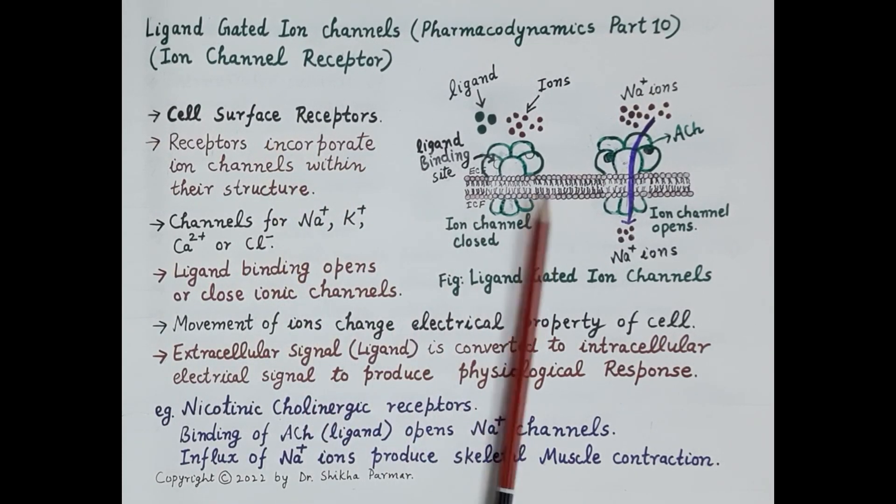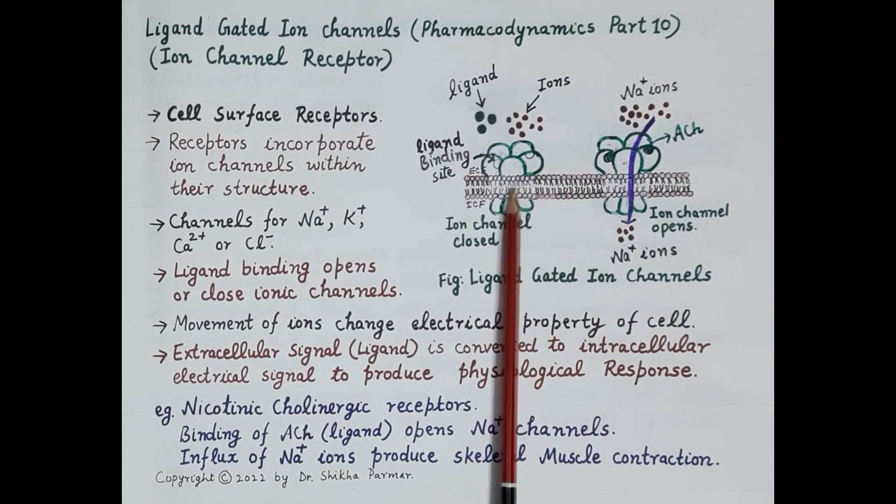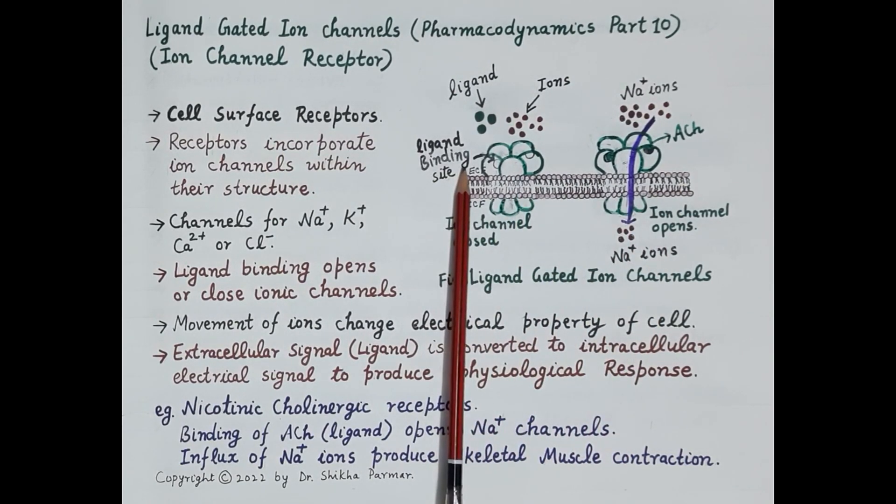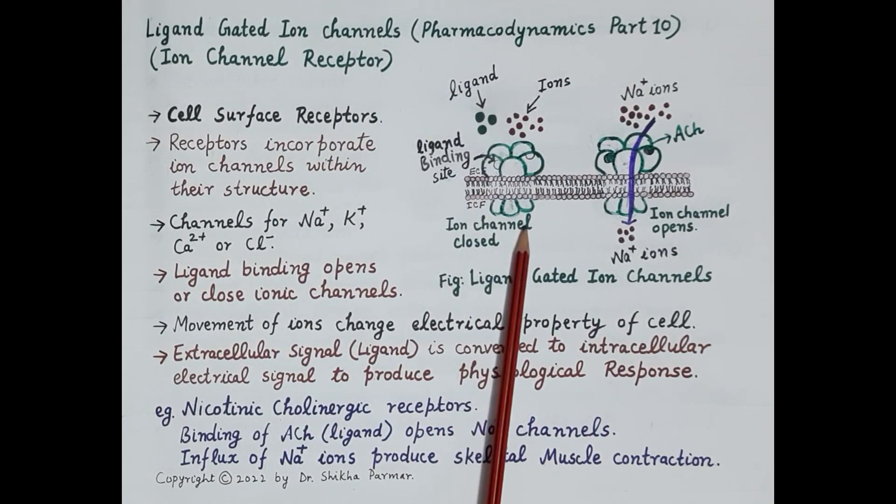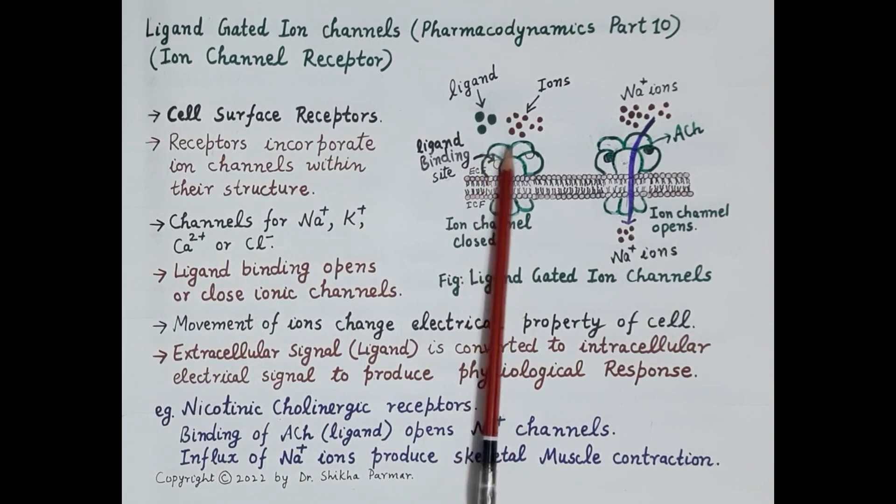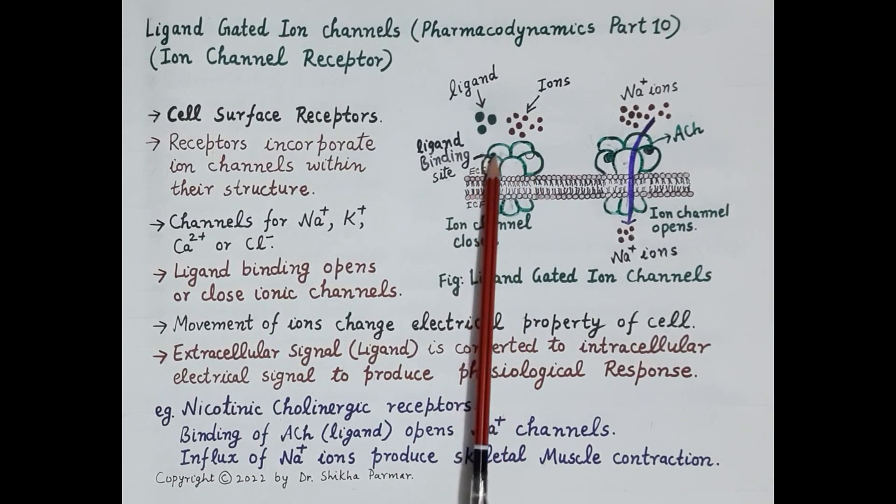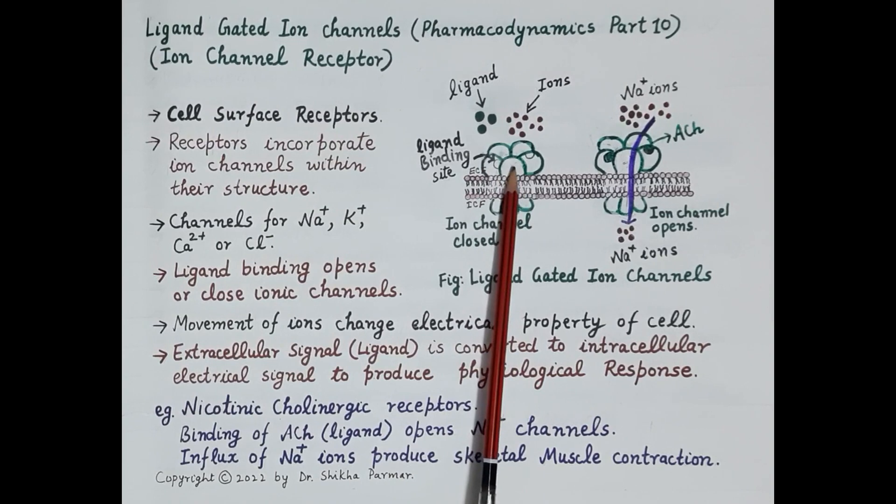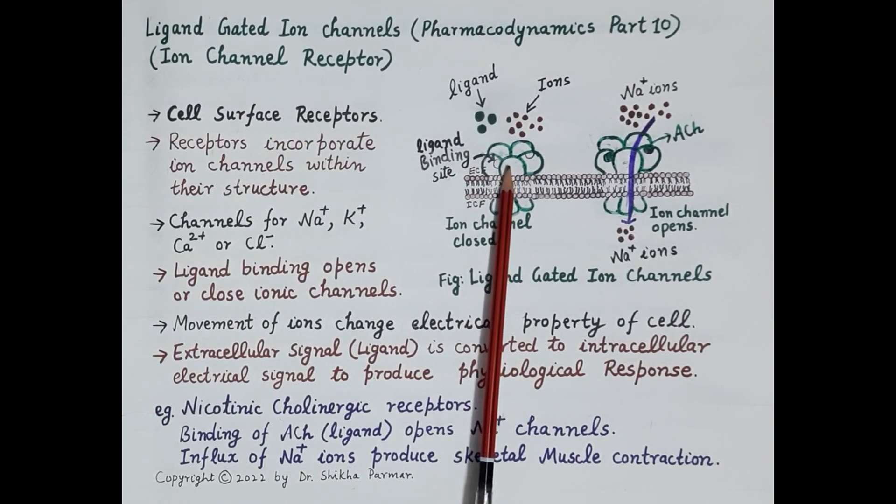Look at this figure. It shows a cell membrane. Outside the cell is the extracellular fluid, and inside the cell is the intracellular fluid, the cytoplasm. These are the ion channel receptors—cell surface receptors. These receptors enclose or incorporate ion channels within their structure.